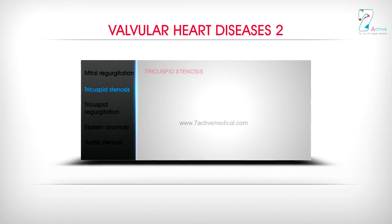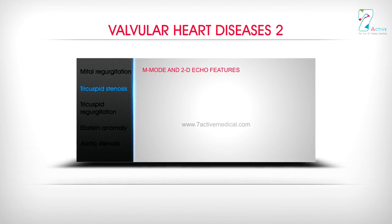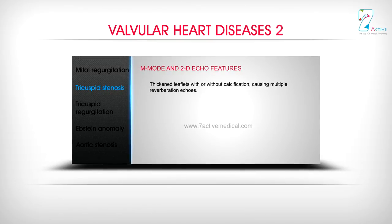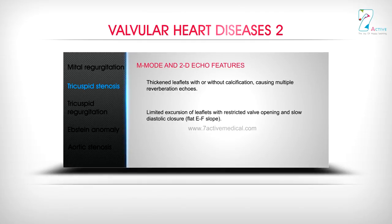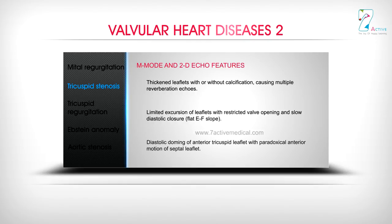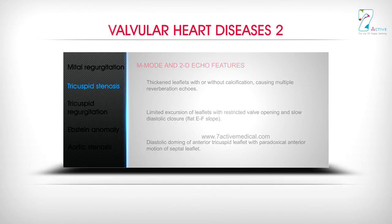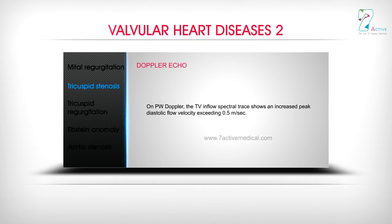Tricuspid Stenosis — M-Mode and 2D Echo features: Thickened leaflets with or without calcification causing multiple reverberation echoes. Limited excursion of leaflets with restricted valve opening and slow diastolic closure, flat EF slope. Diastolic doming of the anterior tricuspid leaflet with paradoxical anterior motion of the septal leaflet. On PW Doppler, the TV inflow spectral trace shows an increased peak diastolic flow velocity exceeding 0.5 m/s.